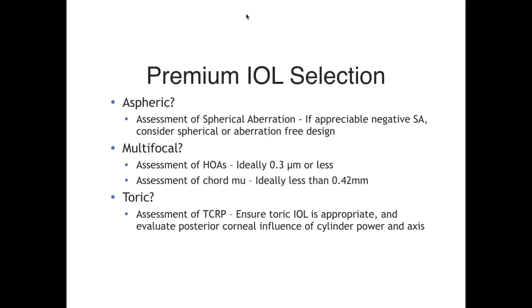For presbyopia-correcting IOLs—such as diffractive bifocal lenses or extended depth of focus lenses—Jack Holliday and others have said that ideally we want 0.3 RMS or less of total higher-order aberrations for diffractive bifocal lens technology. That's a sound rule, particularly given the contrast sensitivity hit when we split light. Additionally, the term Cord Mu—which we coined and published—is a clinically relevant description of centration and the disparity between the center of the entrance pupil and the corneal vertex in a subject-fixated manner. The Pentacam measures and displays Cord Mu in the different lens selection pages.